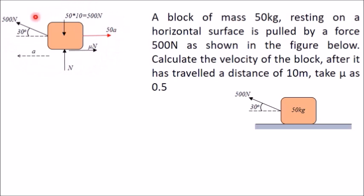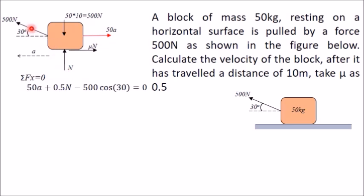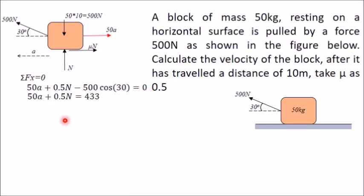Now this body is in equilibrium, so you can apply the equations of equilibrium — sigma Fx equal to 0 and sigma Fy equal to 0 — even though this body is not actually in equilibrium. Applying sigma Fx equal to 0: 50A towards positive x direction, plus 0.5N towards positive x direction, minus 500 cos 30 in the opposite direction, equals 0. Simplifying this equation gives 50A plus 0.5N equal to 433 Newton.